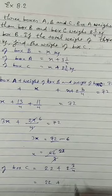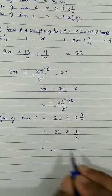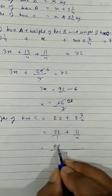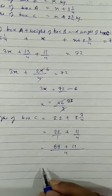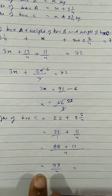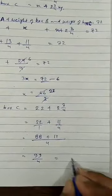So 4 times 2 is 8 plus 3 is 11 upon 4. We can take the LCM of 1 and 4. 4 times 22 is 88 plus 11 is 99 upon 4. Now all the numbers that are given in the question are in mixed form. So the answer will also be written in the mixed form.